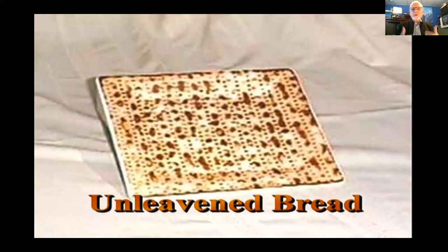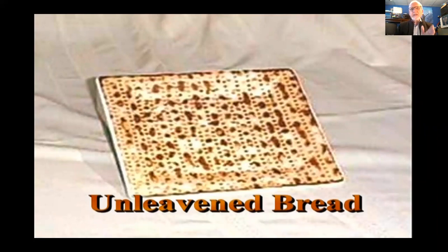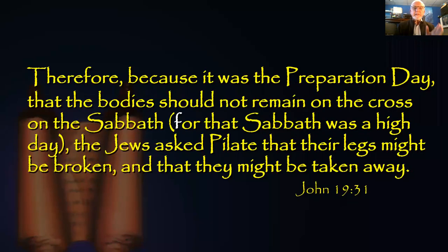Now we know the next day after Nisan 14 begins the seven-day period called Unleavened Bread. Unleavened always means no sin. So Jesus went into the grave without sin just before Unleavened Bread began, which began at sunset on Nisan 14, and then Nisan 15 began. We actually read this in John 19:31 — because it was preparation day, the bodies should not remain on the cross on the Sabbath, for the Sabbath was a high day — that was the first day of Unleavened Bread, a high Sabbath. The last day was also a high Sabbath.